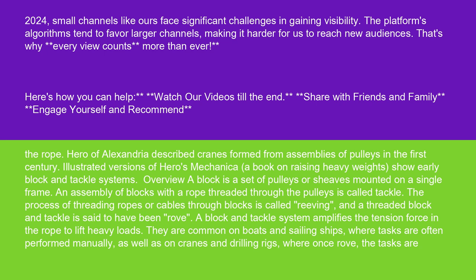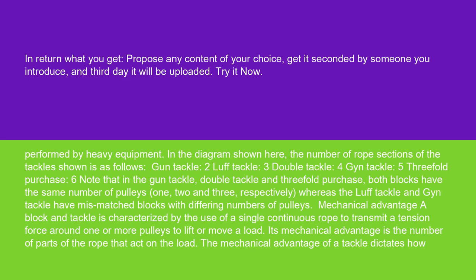Overview: A block is a set of pulleys or sheaves mounted on a single frame. An assembly of blocks with a rope threaded through the pulleys is called tackle. The process of threading ropes or cables through blocks is called reaving, and a threaded block and tackle is said to have been rove. In the diagram shown here, the number of rope sections of the tackle shown is as follows: